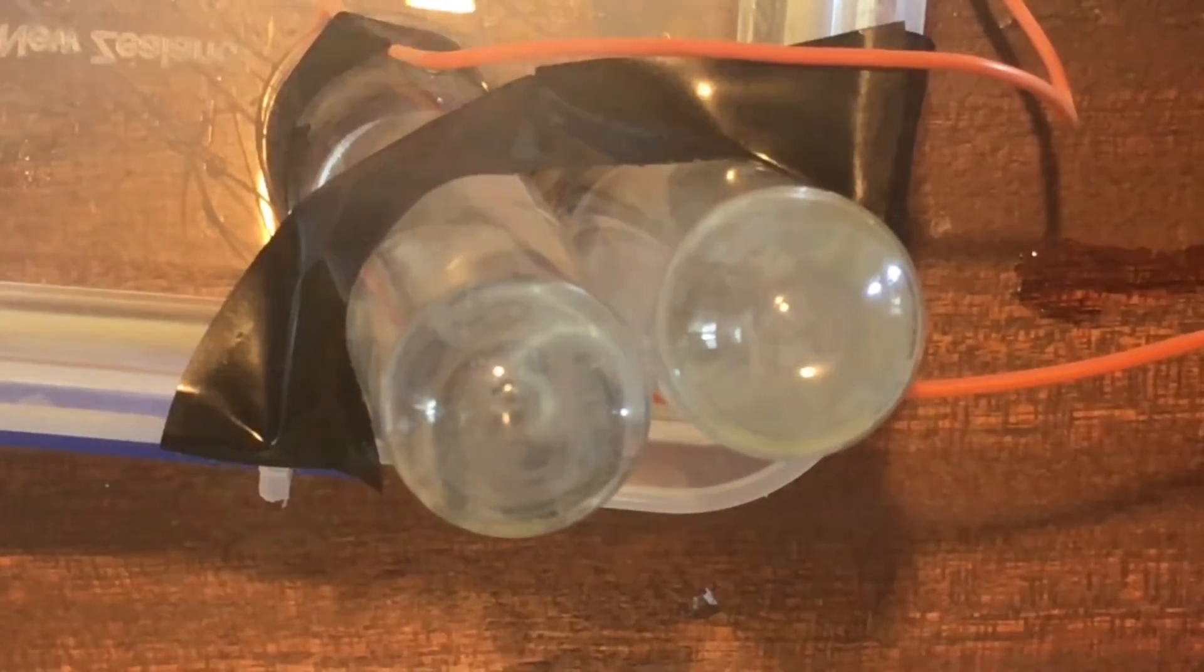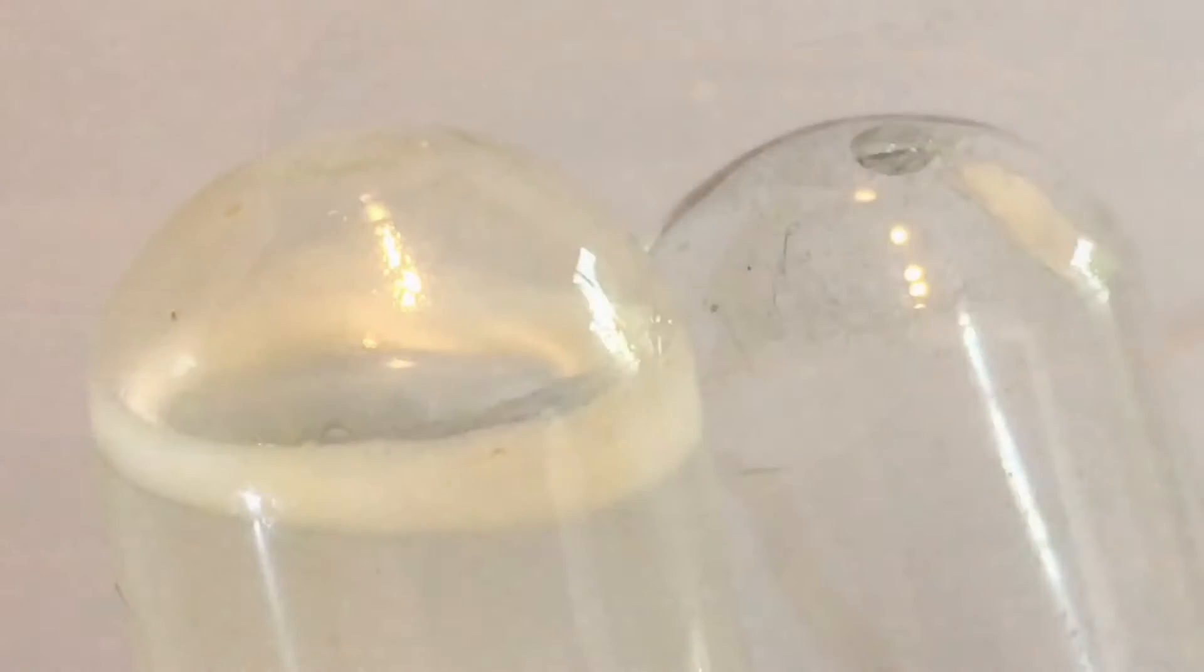We can already see hydrogen and oxygen bubbles flowing off their electrodes to the surface. These gases are being collected in these test tubes.